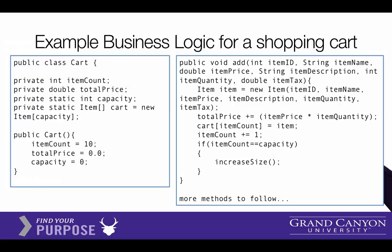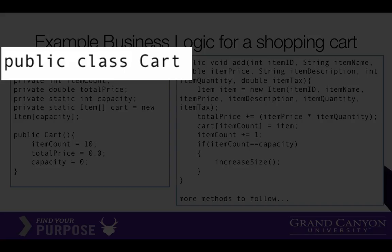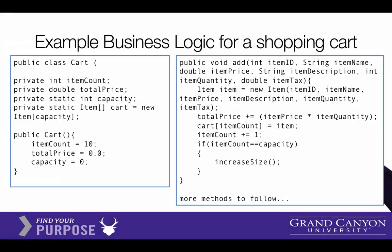Here's some code that might look like a business object. I have a class called Cart with some properties, and I've added one method called add. It would add an item to the cart, talk about the capacity of your cart, and track the total price. That's all working away in our business area.